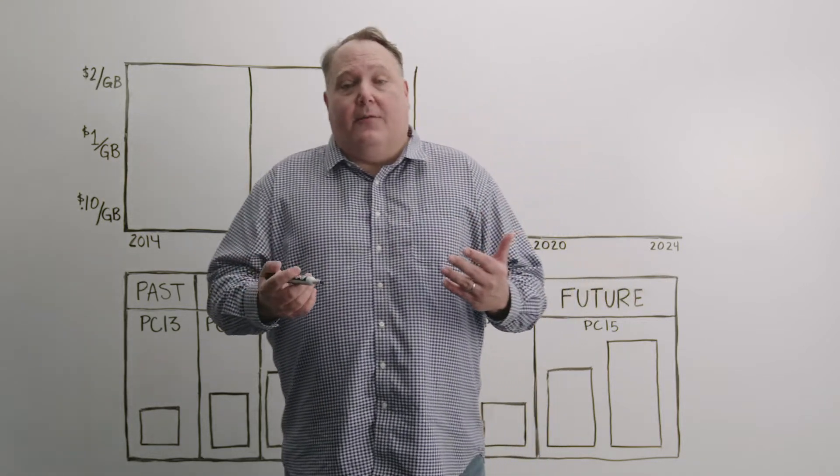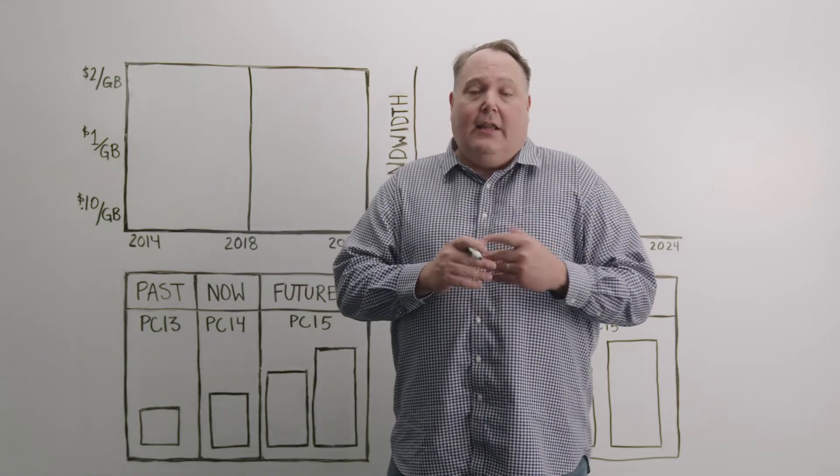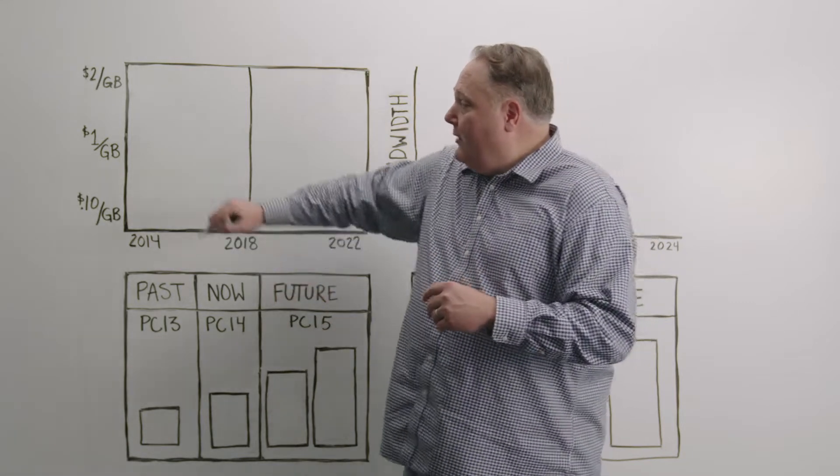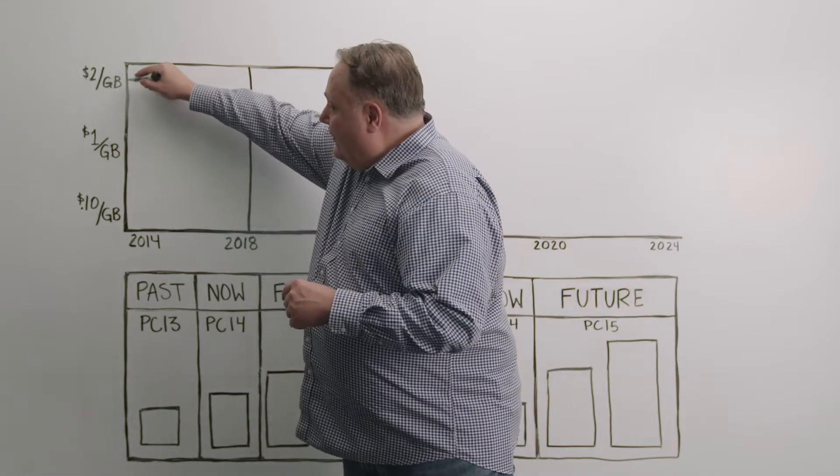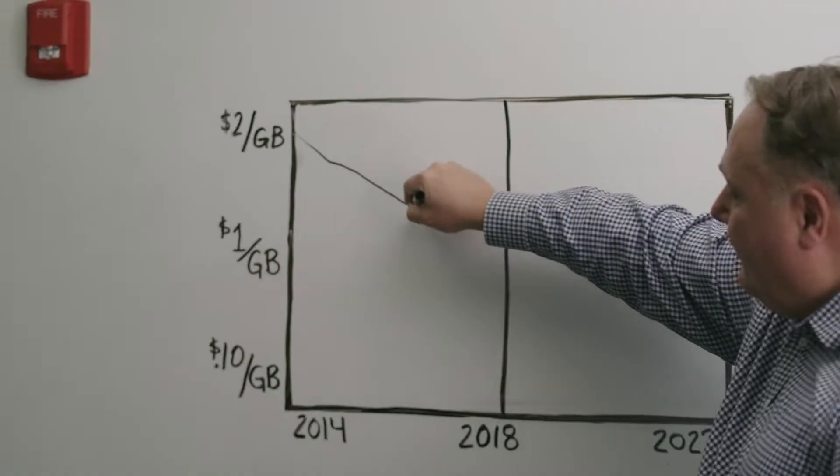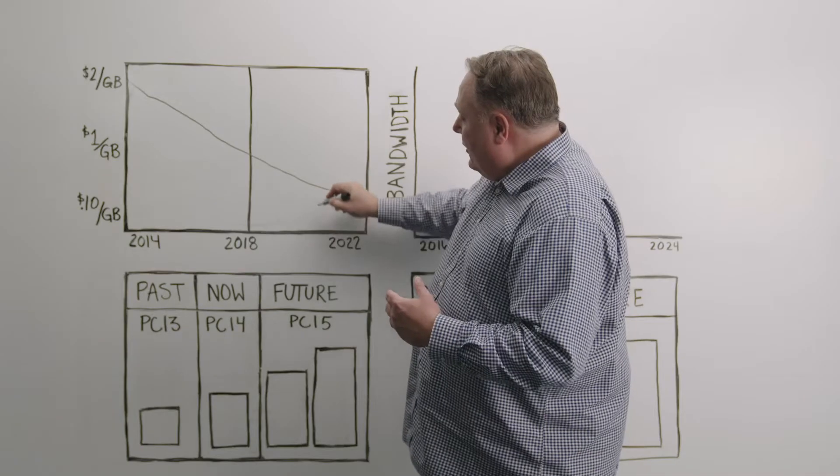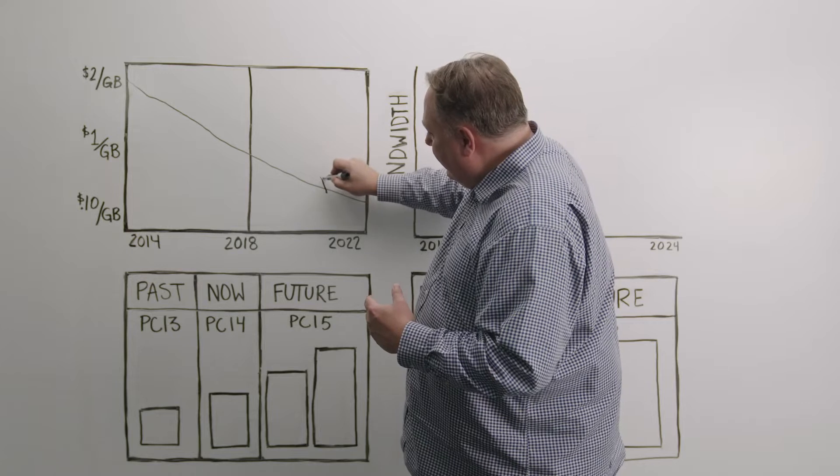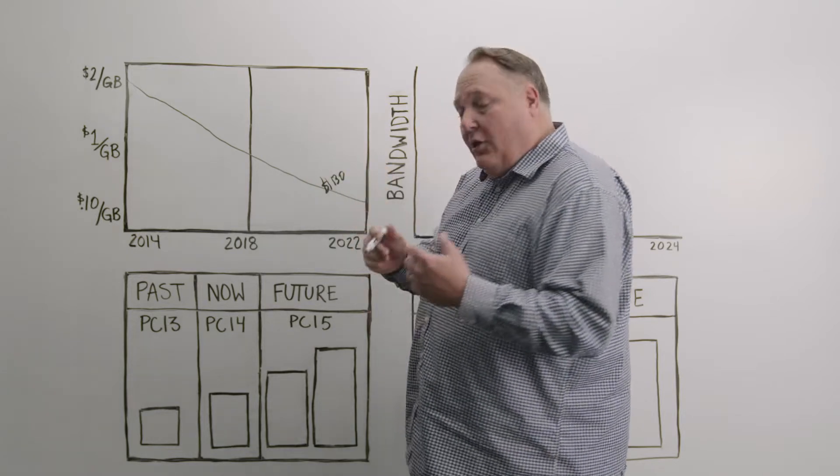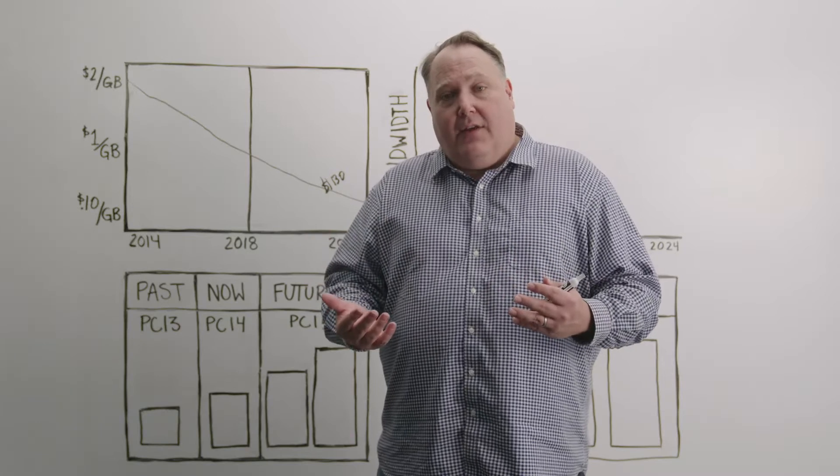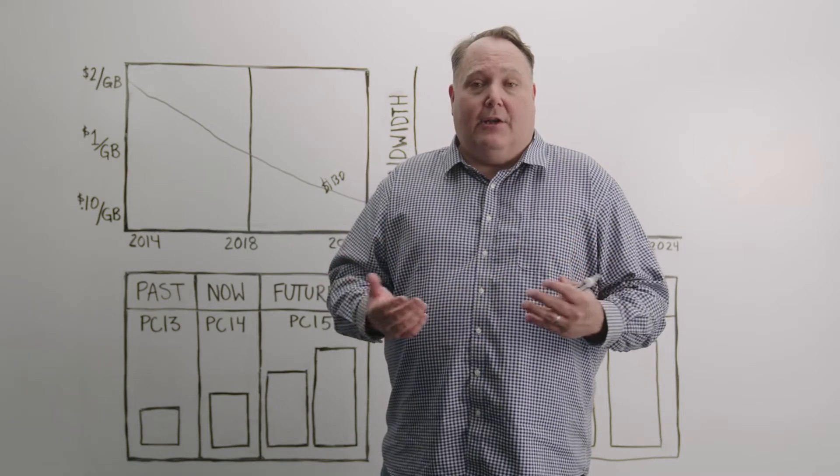These drives used to be expensive. When they came out in 2014, they were $2,000 a terabyte or $2 a gigabyte. But over time, we've gradually decreased and now we're at $130 a terabyte. Over the next couple of years, we're expecting these drives to cross over in total cost of ownership with spinning disks when factoring in power savings as well as the reliability of the drives.